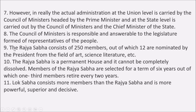The Rajya Sabha consists of 250 members, out of which 12 are nominated by the President from the fields of art, science, literature, etc. The Rajya Sabha is a permanent house and cannot be completely dissolved. Members of the Rajya Sabha are elected for a term of six years, out of which one-third members retire every two years. The Lok Sabha consists of more members than the Rajya Sabha and is more powerful, superior, and decisive.